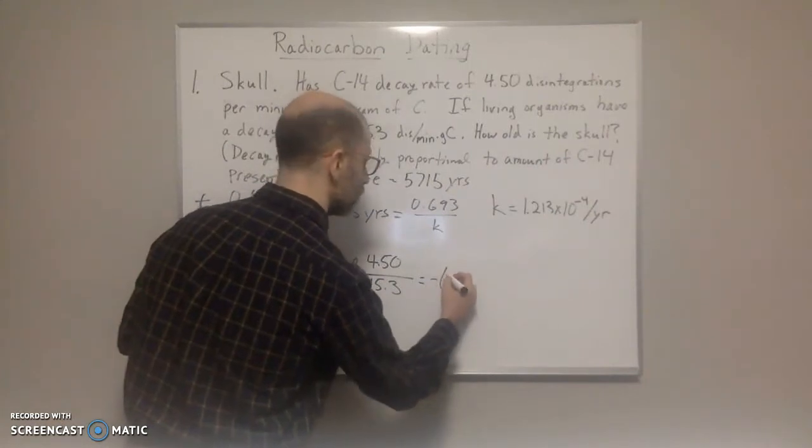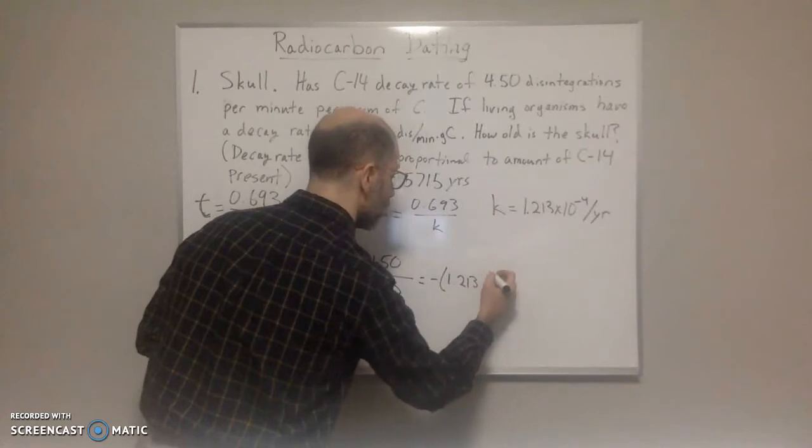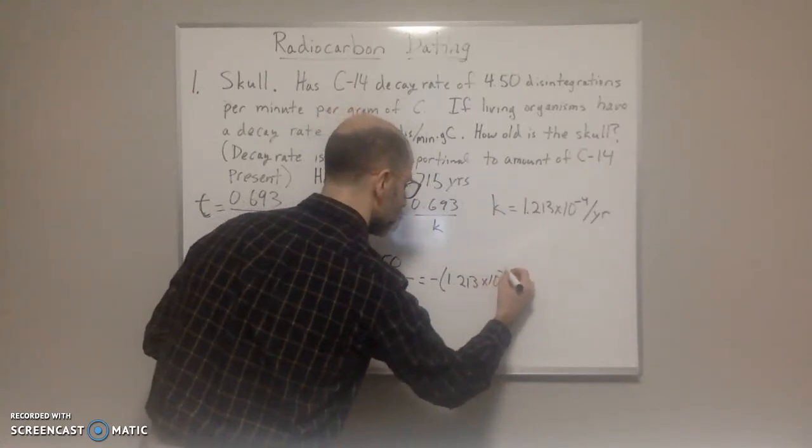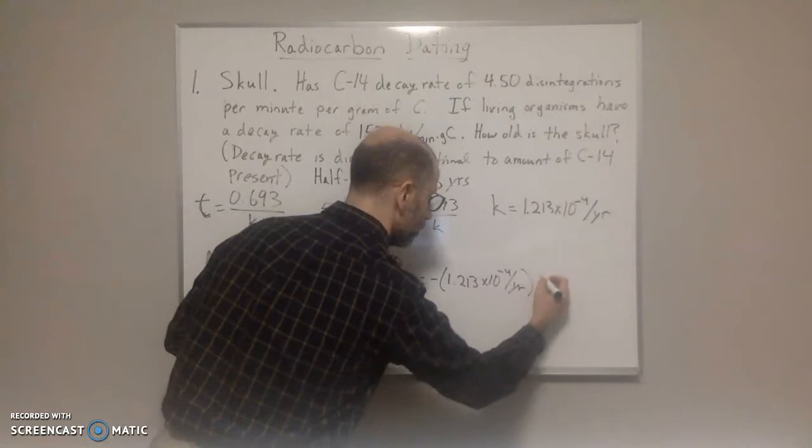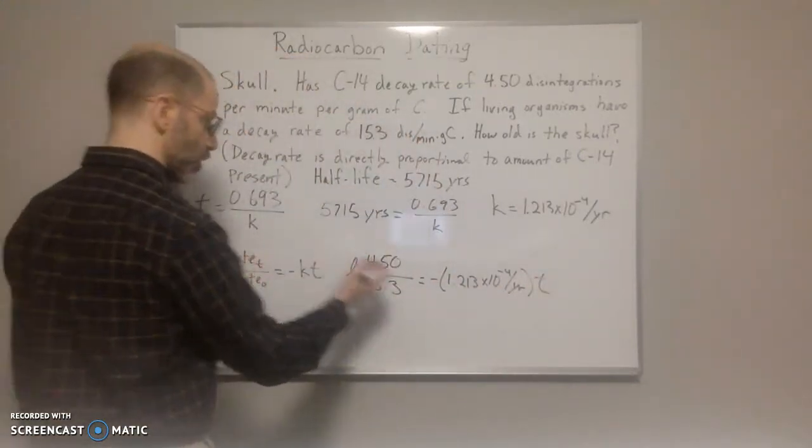So the ln, and that's going to be equal to negative k, which is right here, 1.213 times 10 to the negative 4 per year times t. And we're going to solve for t.